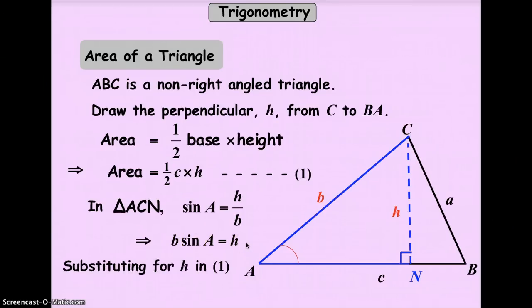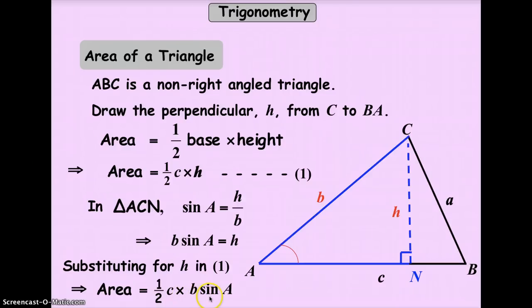From this equation, we are now going to substitute h from what we have in equation 1. If we do that, we will end up with area is 1 half c times your h here. We are substituting equation 1, 1 half times c times. We replace your h here by the b times sine A. So now, your new formula or equation is whenever you have a non-right angle triangle is 1 half times c times b times sine A.